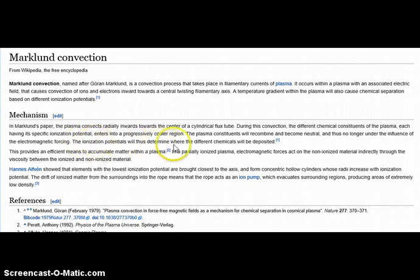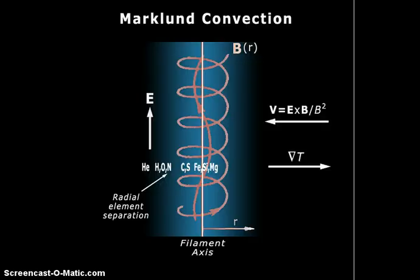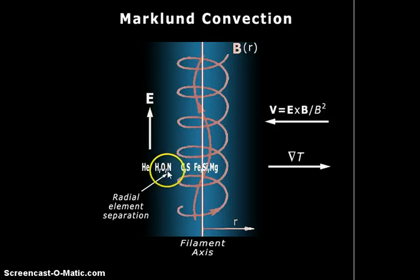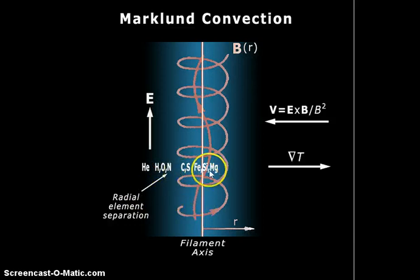The ionization potentials will thus determine where the chemicals will be deposited. Here we have Markland convection along a filamentary axis, and the elements separate based on their ionization potential: Fe is iron, Si is silicon, Mg is magnesium, S is sulfur, C is carbon, then nitrogen, oxygen, hydrogen, and helium. These materials separate based on their ionization potential.